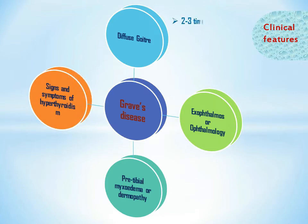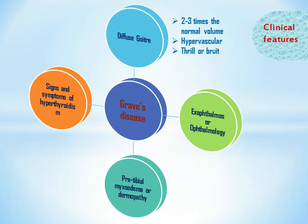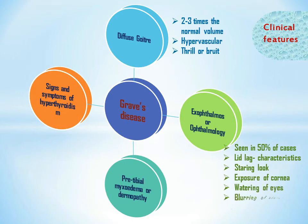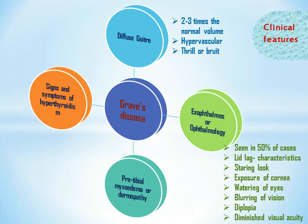Diffuse goiter is a diffuse enlargement of the thyroid, about two to three times the normal volume. The gland is hypervascular and a thrill or bruit may be heard over it. Exophthalmos or proptosis is seen in half of the patients at presentation. Symptoms of ophthalmopathy include staring look, exposure of the entire cornea, watering of eyes due to defective drainage of tears, and blurring of vision.